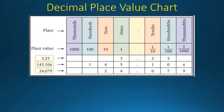For 145.106: the 1 will be in the hundreds place, the 4 will be in the tens place, the 5 will be in the ones place, then we have the decimal point. The 1 will be in the tenths place, the 0 will be in the hundredths place, and the 6 will be in the thousandths place. Now let's take the third and final example: 24.079. The 2 will be in the tens place, 4 in the ones place, then the decimal point. The 0 will be in the tenths place, the 7 in the hundredths place, and 9 in the thousandths place.